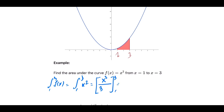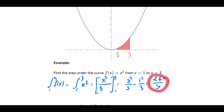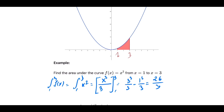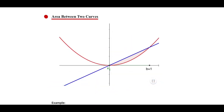This equals 3³ over 3 minus 1³ over 3, which is 27/3 minus 1/3 = 26/3. And sure enough, if you put this number in your calculator you find it is 8.666 repeating, which is approximately 8.7.